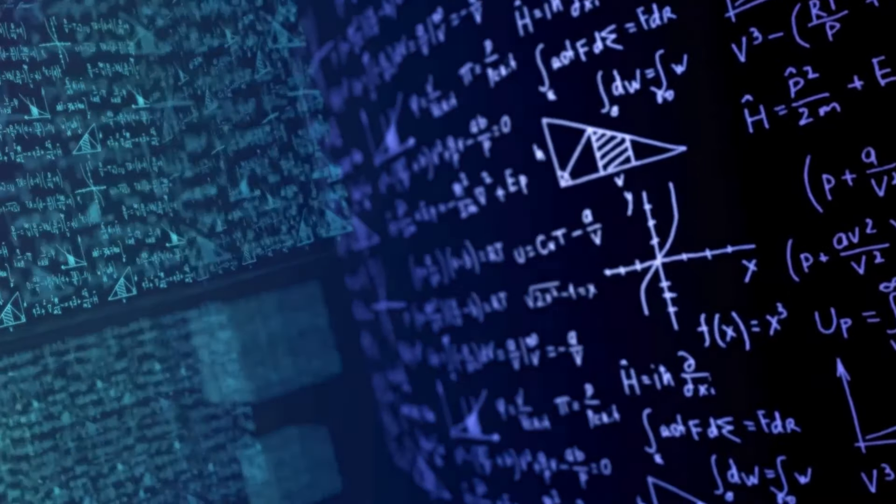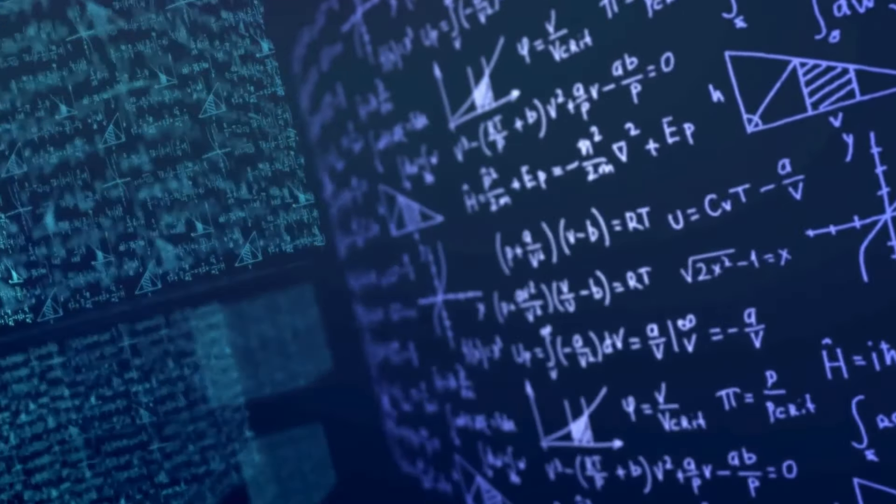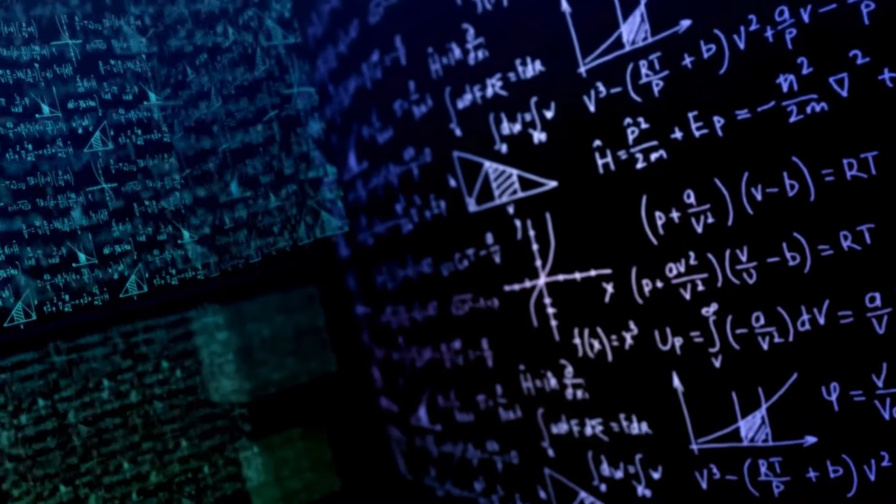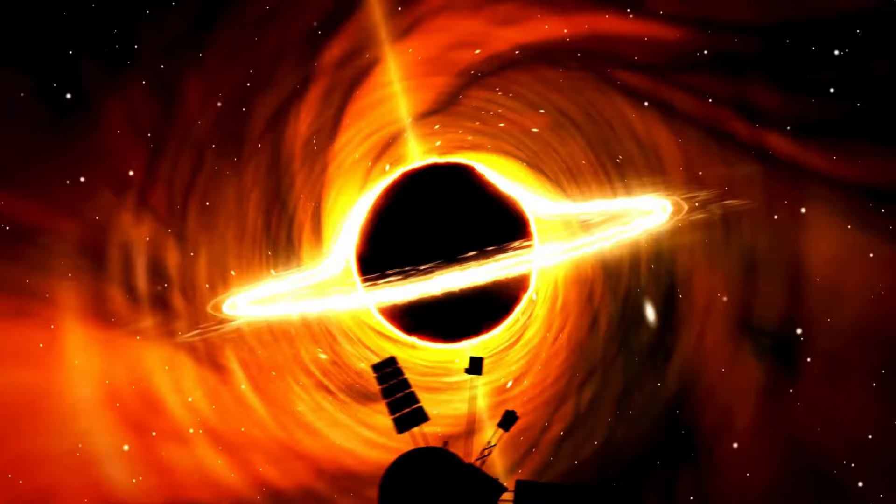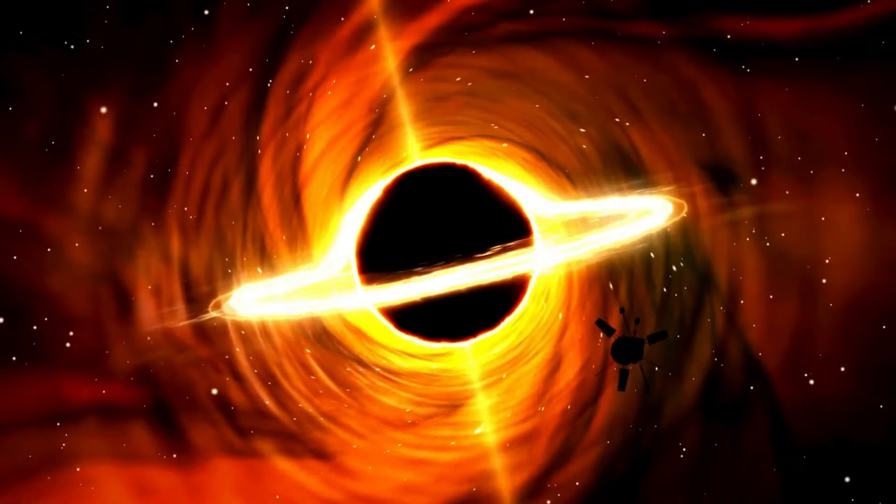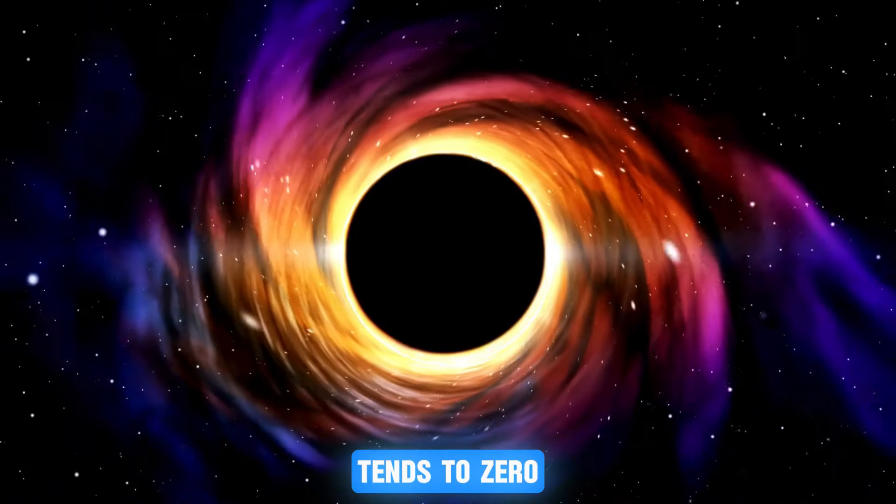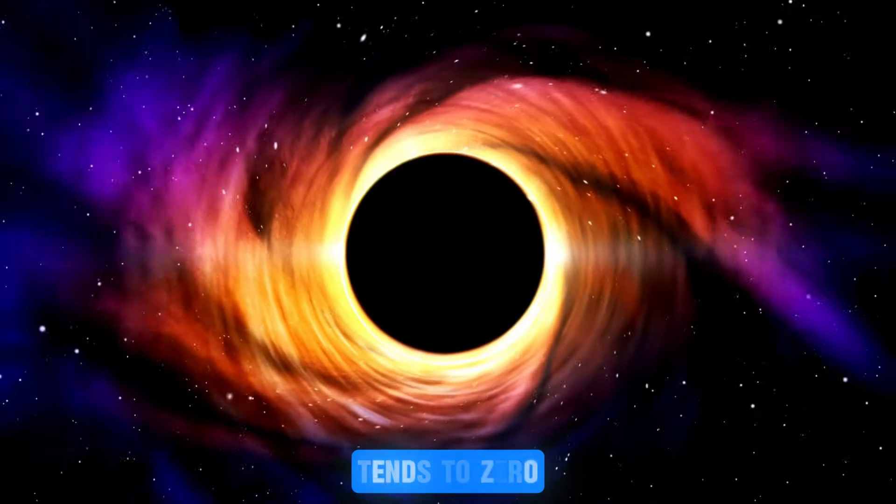The result? The birth of the weirdest thing predicted by physics, a black hole. A black hole is a massive object that occupies no physical space. Its size tends to zero and its density to infinity.